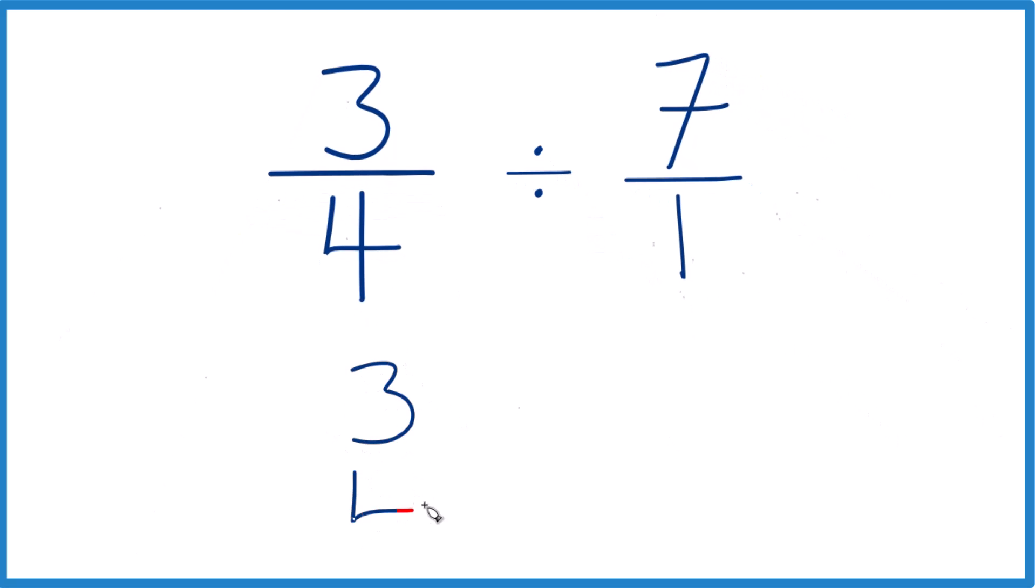Take your three-fourths here. And instead of division, we're going to multiply by the reciprocal, seven over one. So the numerator goes to the bottom. Denominator goes to the top. So we have one over seven, or one-seventh.